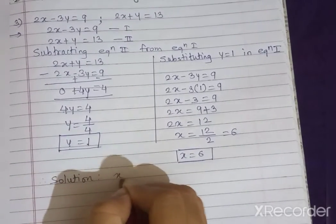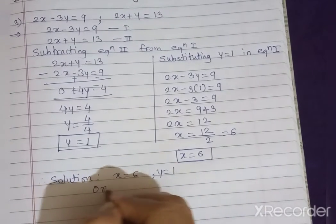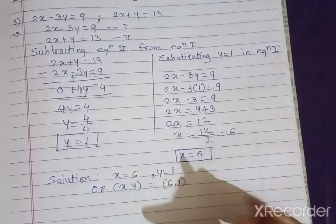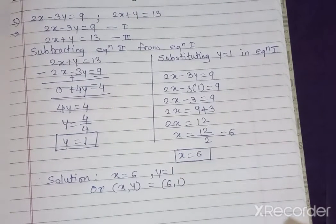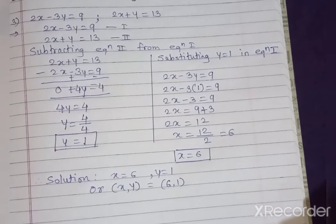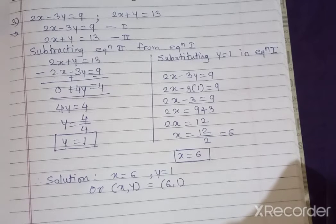So therefore the solution of the given simultaneous equations is x equals 6 and y equals 1, which can also be written as (x, y) = (6, 1). Students, in this way you can solve all the different simultaneous equations. If you have any doubt you can ask me. There is work for you — solve simultaneous equations from this question up to sum 5. Thank you students.